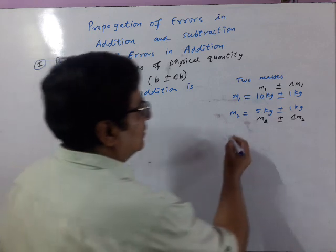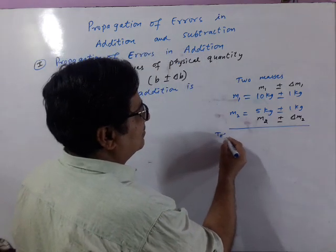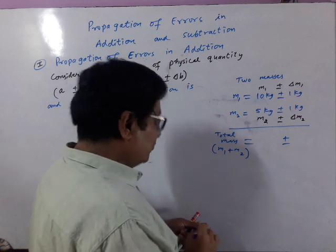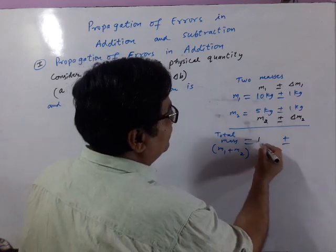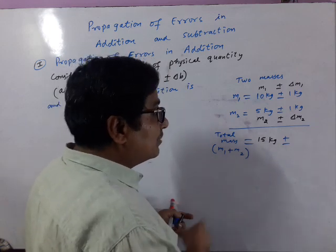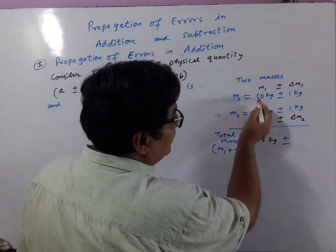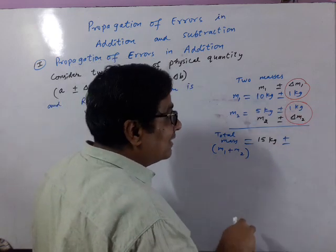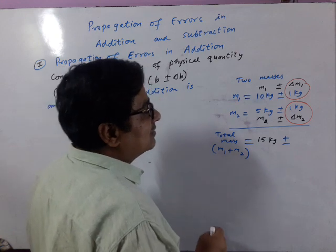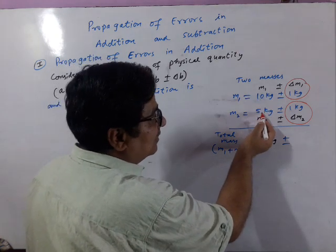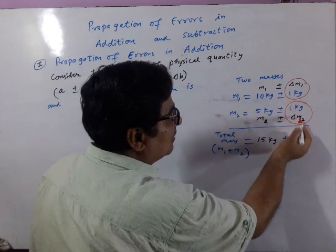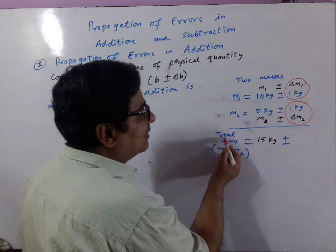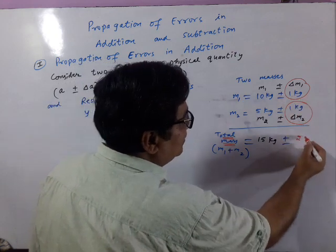Now, how do you add? If you are asked to find total mass, you know total mass is M1 plus M2. You know 10 kg plus 5 kg is 15 kg. Today's topic is: when you are adding these two masses M1 and M2, how will you deal with these errors? While adding two values, errors are always added up. So error in M1 plus error in M2 gives the error in total mass — 1 kg plus 1 kg equals 2 kg.